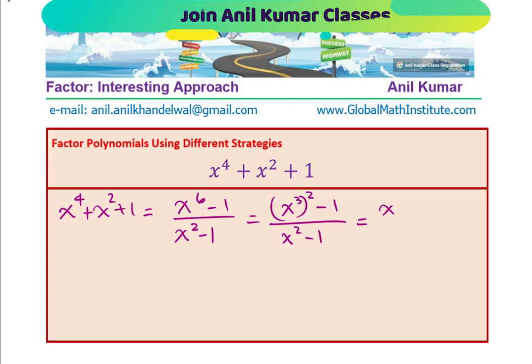So, that gives you x cube plus 1 times x cube minus 1, and in the denominator, we get x plus 1 times x minus 1.